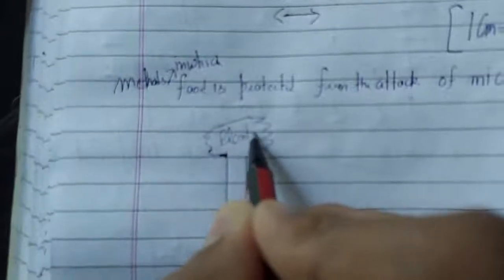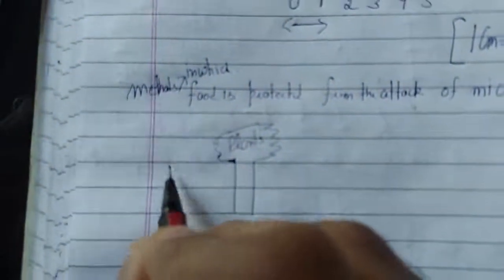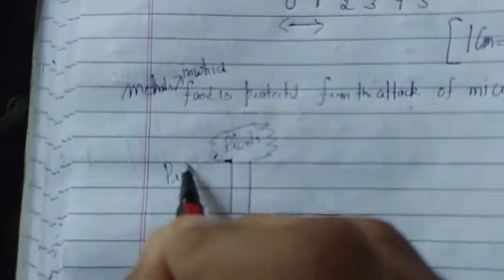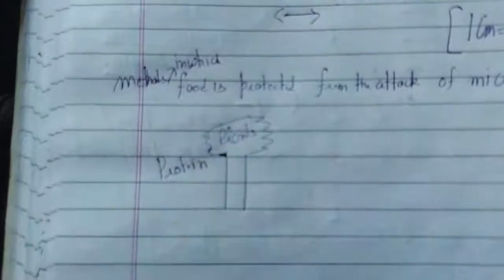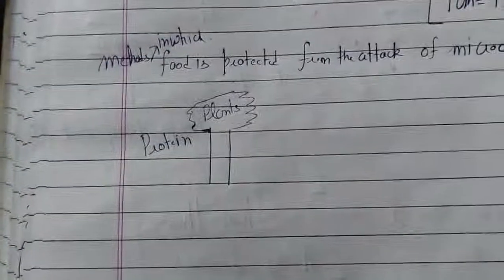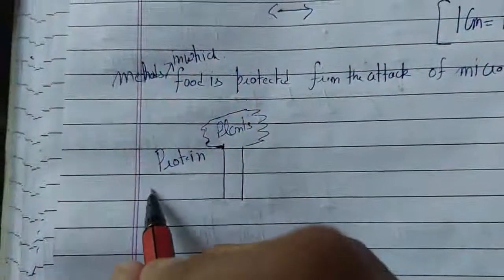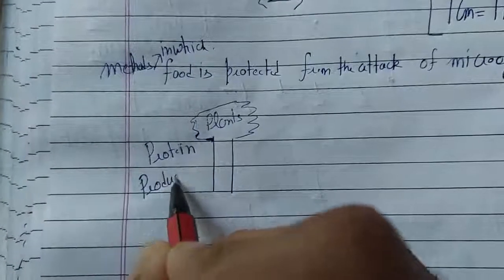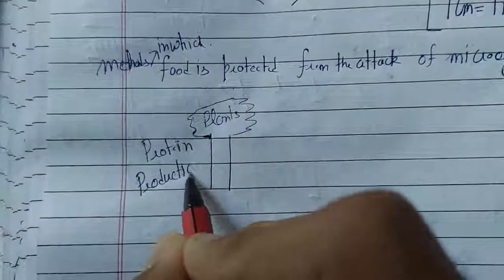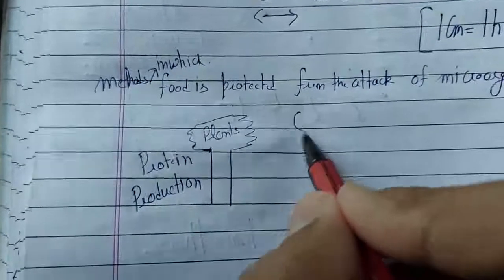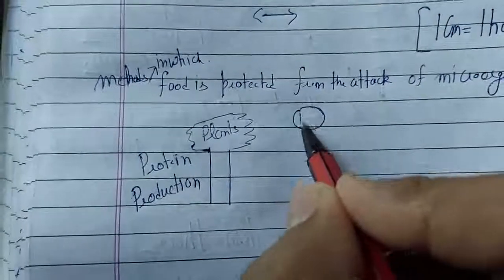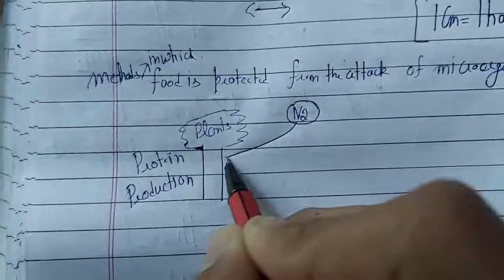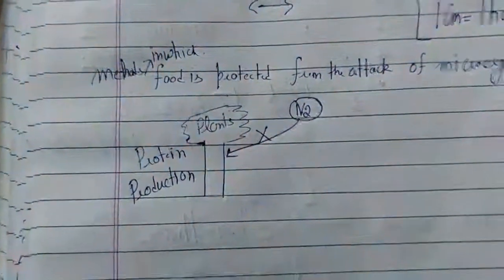Plants need nitrogen for the production of proteins. But plants cannot absorb nitrogen directly from the atmosphere — they can't do that.